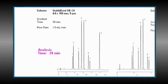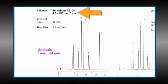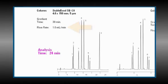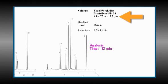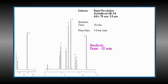Our sample is well separated on a 4.6 by 150 millimeter 5 micron column, using a gradient time of 30 minutes at 1 ml per minute. We achieved a significant reduction in analysis time by reducing the column length to 75 millimeters, which cuts the column volume in half, and at the same time, decreased the gradient time by half. The gradient steepness was unchanged, but the analysis time decreased by 50%. Solvent usage and a reduction in reequilibration time were also achieved.